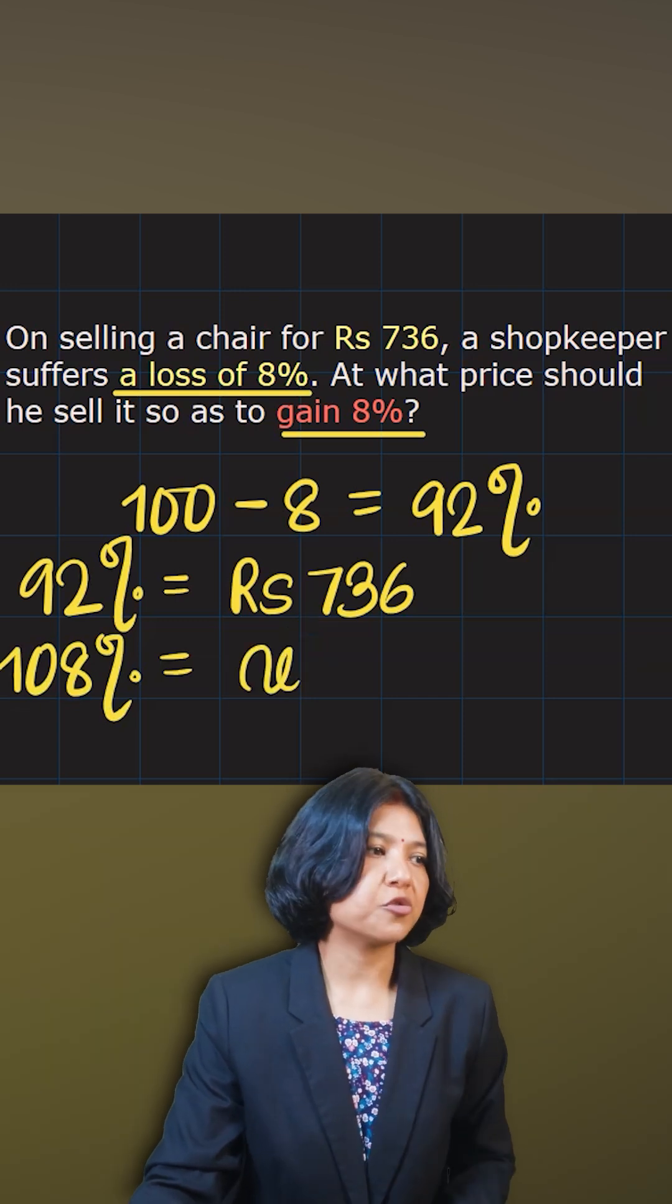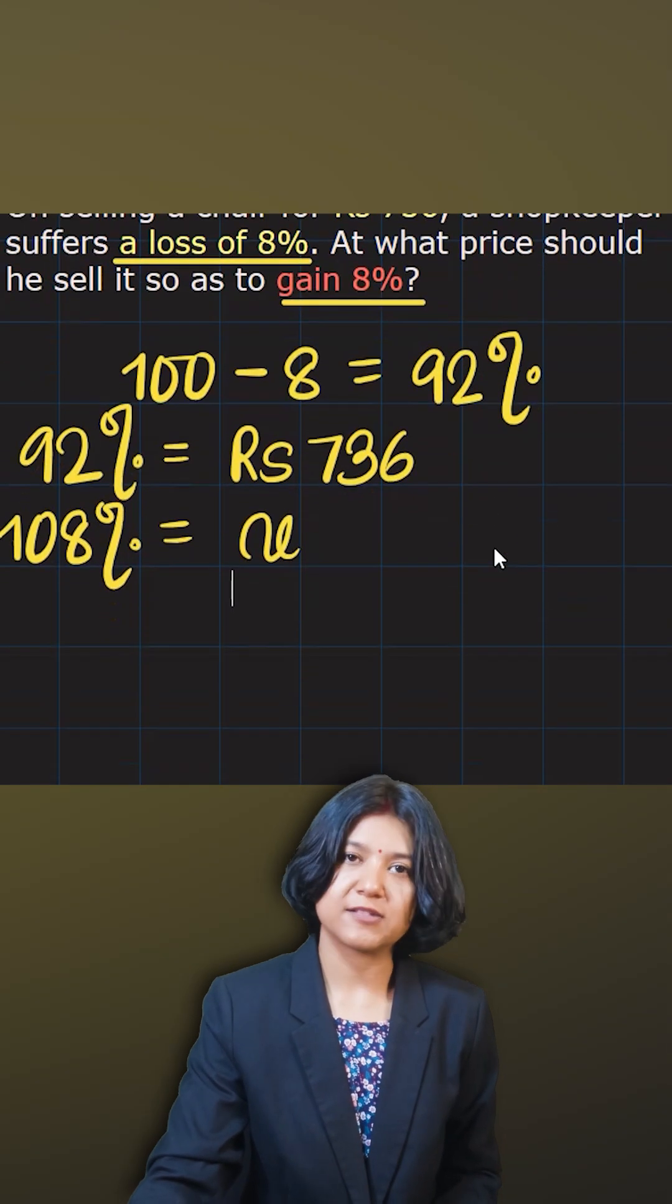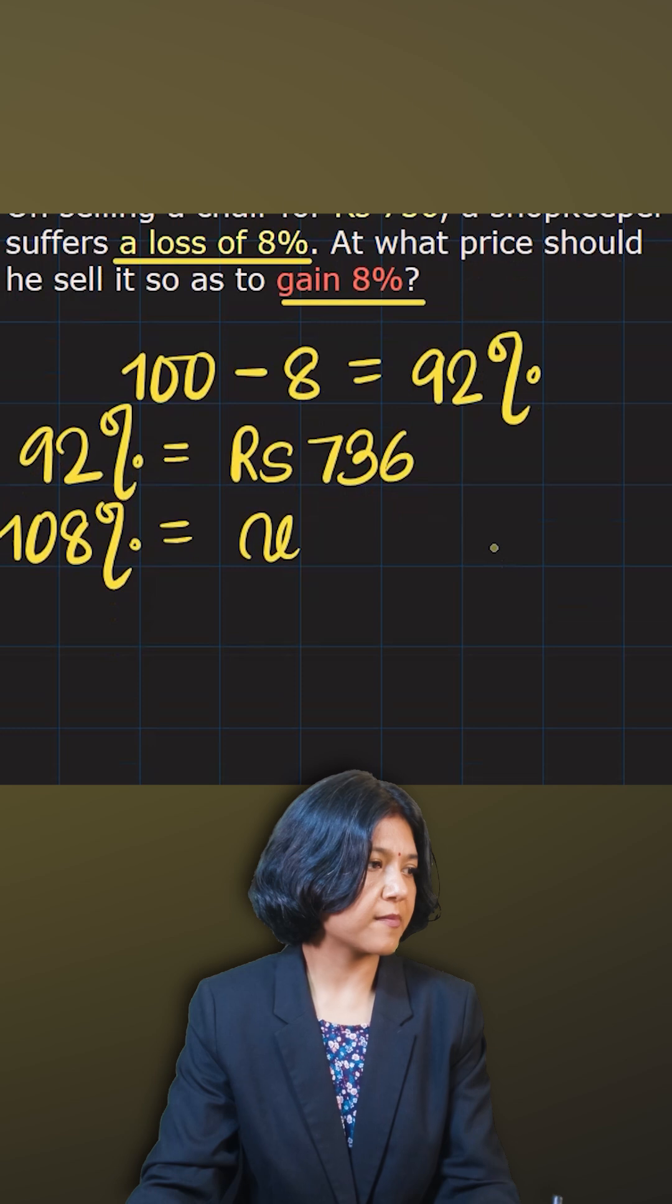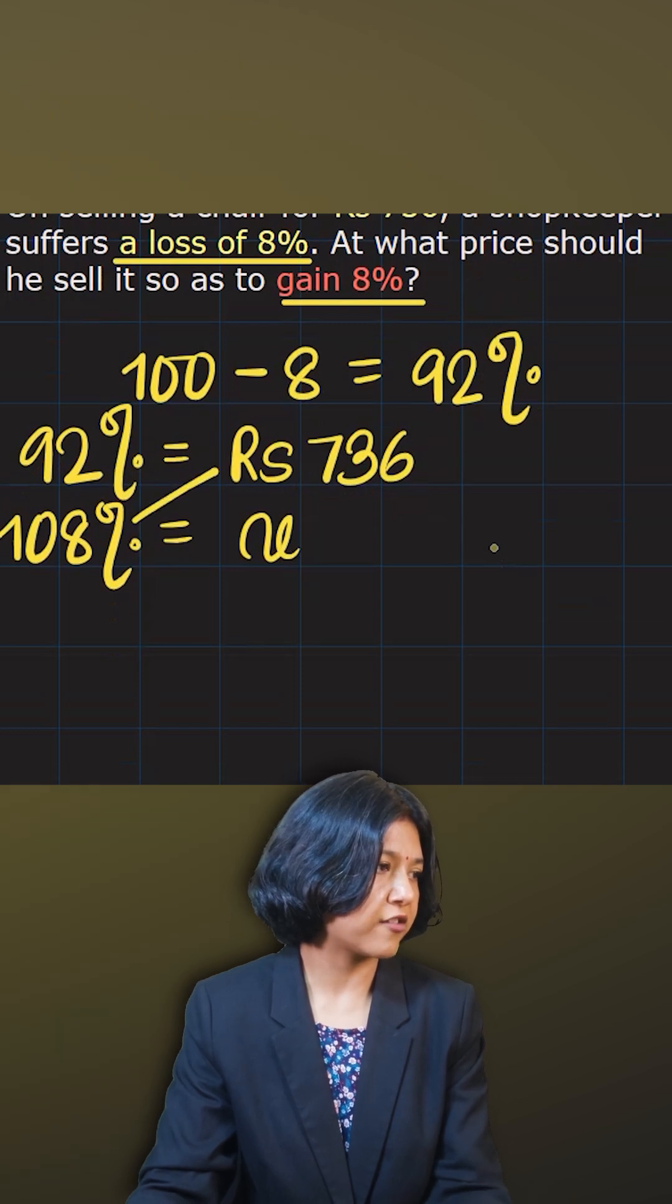All you need is 108% here. So let's say this is x. How to find this quickly is by cross multiplication. Upon cross multiplication, you see that these two pair of values are given to you, so write that first.